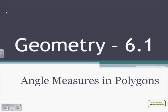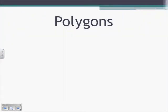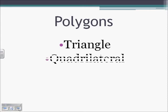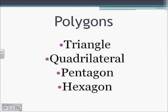Section 6.1: Angle Measures in Polygons. We have a lot of different kinds of polygons. We have triangles with three sides, quadrilaterals with four, pentagons with five, and hexagons with six. We have heptagons, octagons, nonagons — they continue on forever. A polygon is just an enclosed figure with at least three sides.